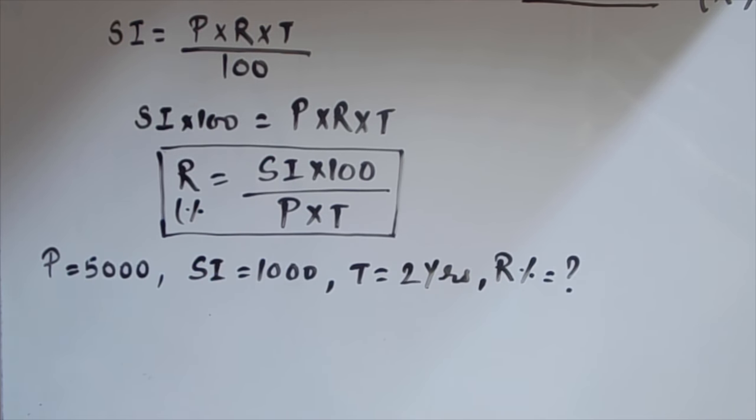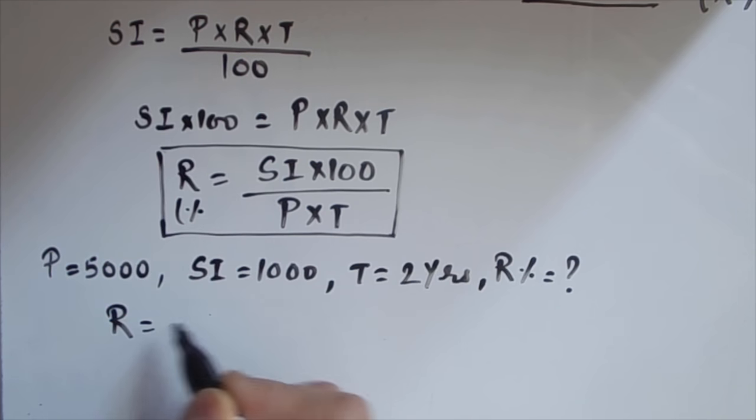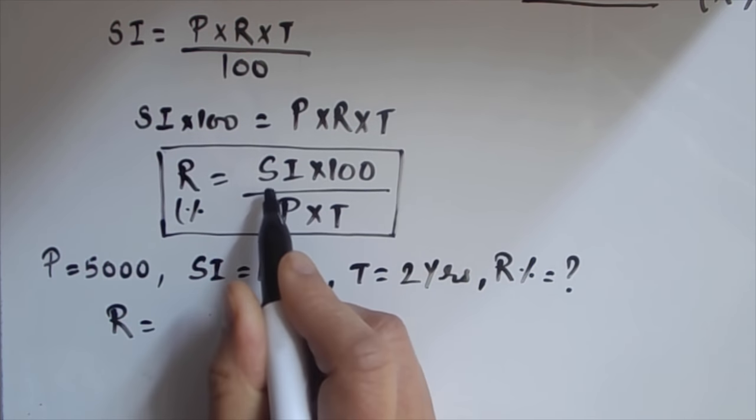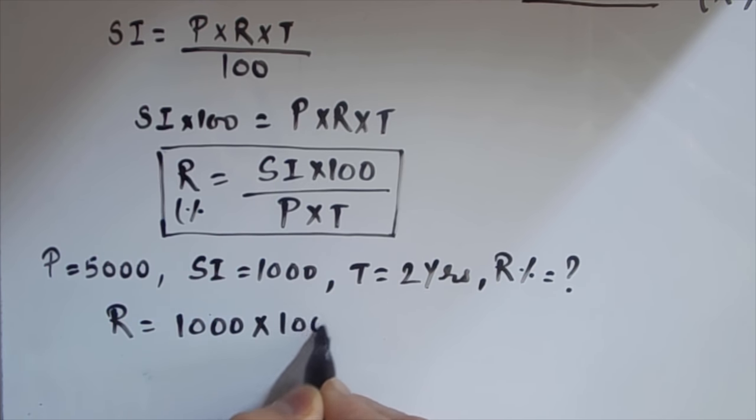the bank is charging. So we know all these quantities now. We just need to put all these things in the formula for rate of interest, which is R equals simple interest, so our simple interest is 1000 times 100 divided by principal amount is 5000, which we have taken for two years.